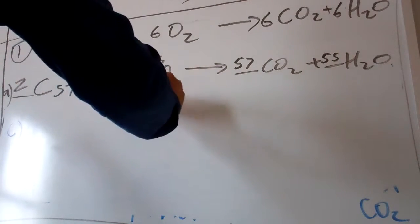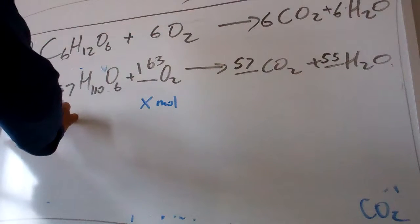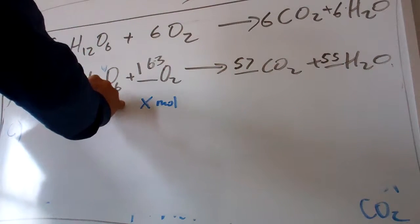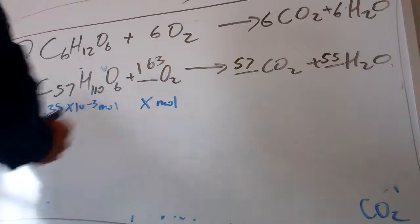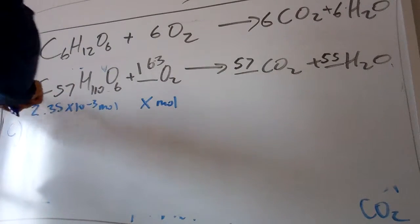...of oxygen, so X moles of oxygen, do you need to combust 2.35 times 10 to the negative 3 moles? And really this is the mole ratio: for every two of these requires 163. So we're gonna start into step 2 from last time, just jump into the mole ratio.